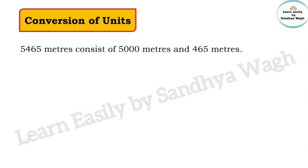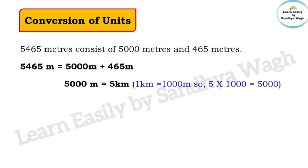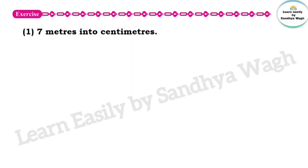Next, 5465 meters consists of 5000 meters and 465 meters. 5000 meters means 5 kilometers. So 5465 meters is equal to 5 kilometers and 465 meters. Now let us solve our exercise.